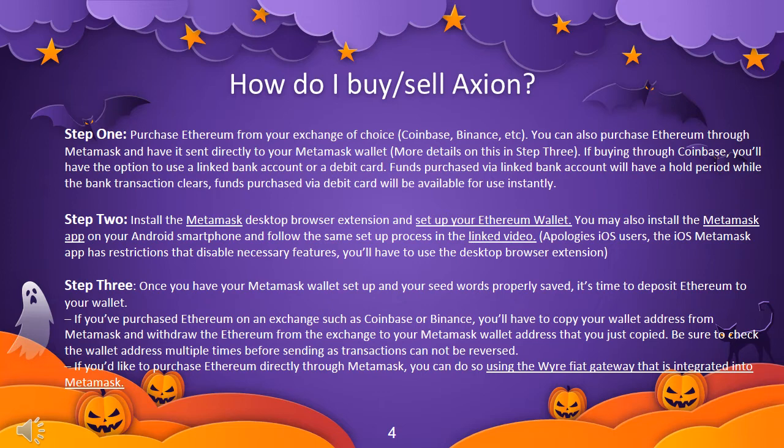Step 3: Once you have your Metamask wallet set up and your seed words properly saved, it's time to deposit Ethereum to your wallet. If you've purchased Ethereum on an exchange such as Coinbase or Binance, copy your wallet address from Metamask and withdraw the Ethereum to your Metamask wallet address. Be sure to check the wallet address multiple times before sending, as transactions cannot be reversed. You can also purchase Ethereum directly through Metamask using their integrated gateway.